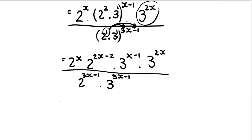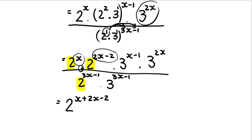Once you've gotten it to this step, we apply the following rule: if the bases are the same — and as you can see here we have a base that's the same here, here, and here — if the bases are the same and we are multiplying, we keep the base and we add the exponents. So we're going to take this exponent plus this exponent: 2x minus two. In the same way, if the bases are the same but we are dividing, we minus the exponent. So we say minus — we're minusing this entire thing — that's why I put brackets: 3x minus one.